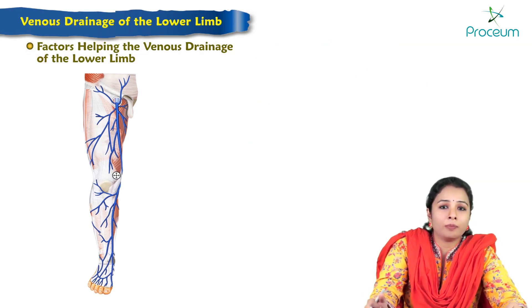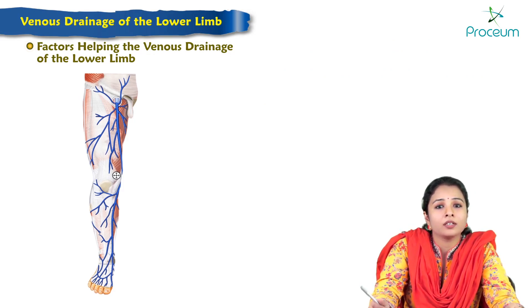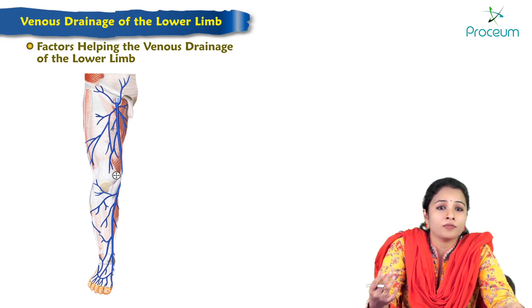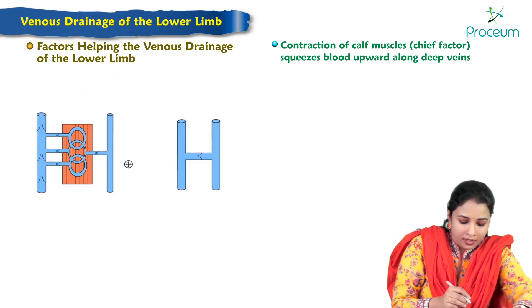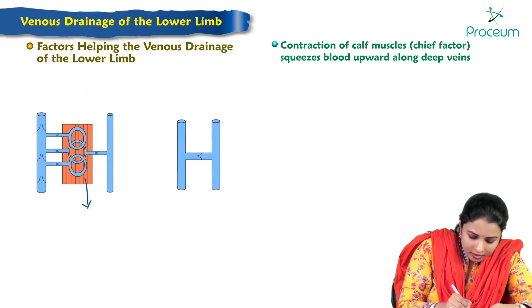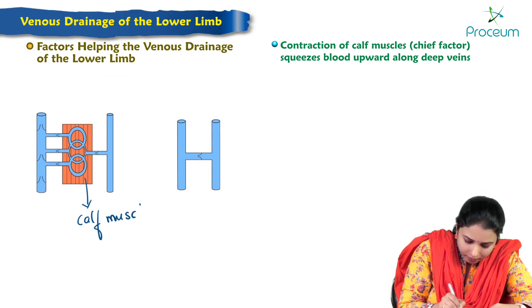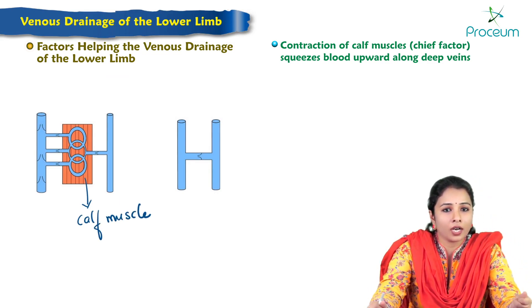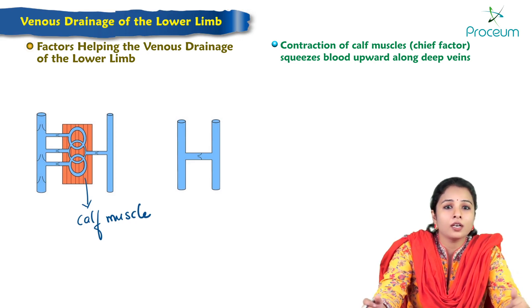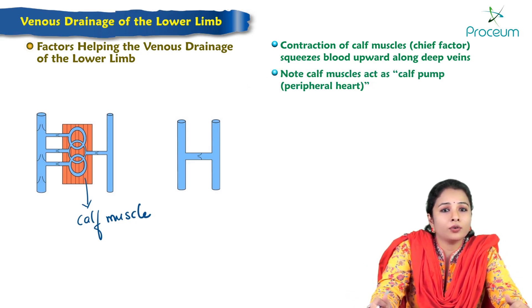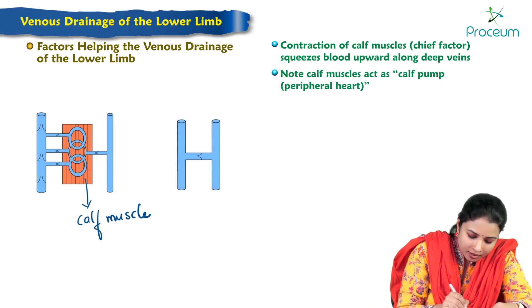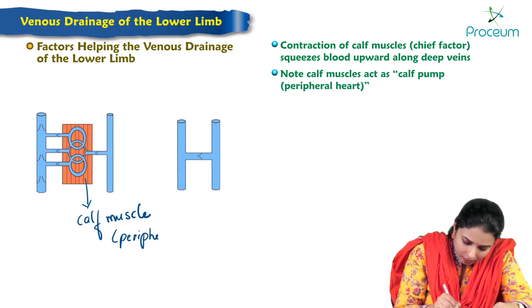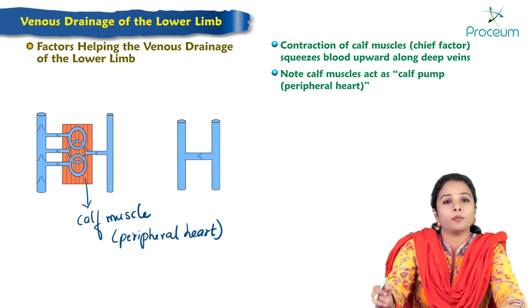Let's see the factors helping the venous drainage of the lower limb. The first factor is the contraction of calf muscles, which is the chief factor that squeezes the blood upwards along the deep veins. The calf pump is therefore considered as the peripheral heart.